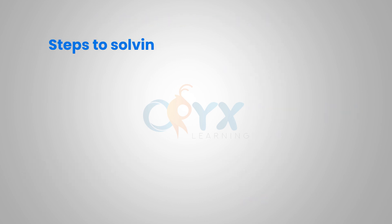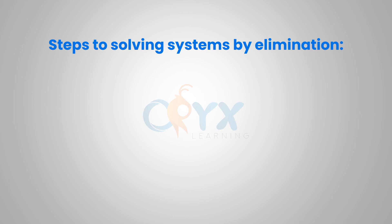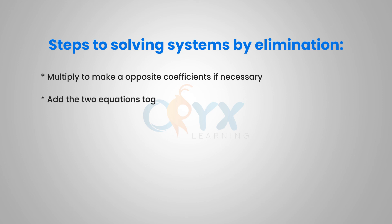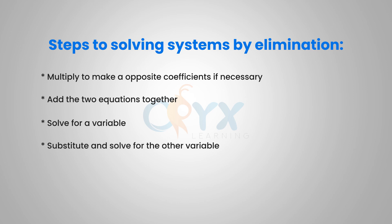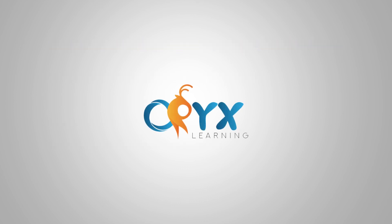Remember, to solve a system of equations by elimination: first, multiply to make opposite coefficients if necessary; then add the two equations together; solve for the remaining variable; and substitute to solve for the other variable. Your solution will always be written as a coordinate point. Thank you for watching this lesson.